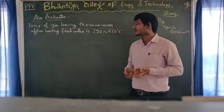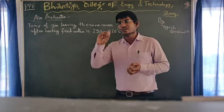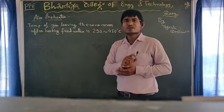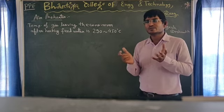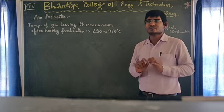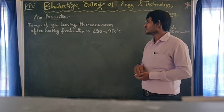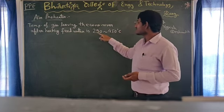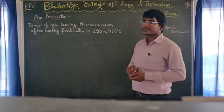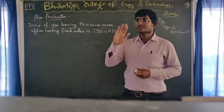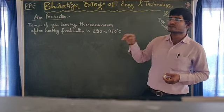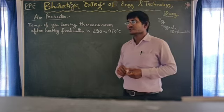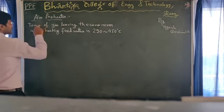Why we are using the air pre-heater? In a boiler, when the flue gas flows through the re-heater, superheater, and after it completely passes through the economizer — where the feed water is heated to a certain temperature before entering the boiler — the flue gas temperature after leaving the economizer is 290 to 450 degrees centigrade, which is too high. If we pass this flue gas through the chimney to the atmosphere, it will be wasted. So we have to utilize this flue gas temperature, and we install an air pre-heater after the economizer.